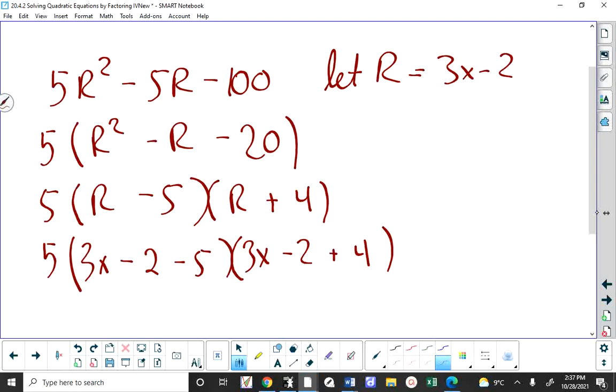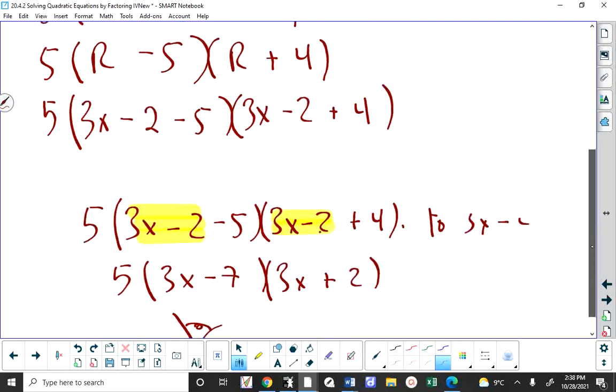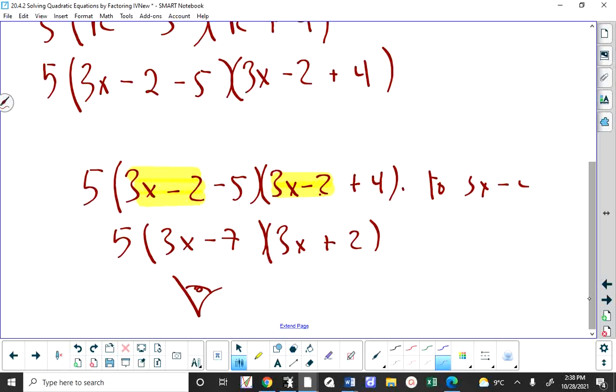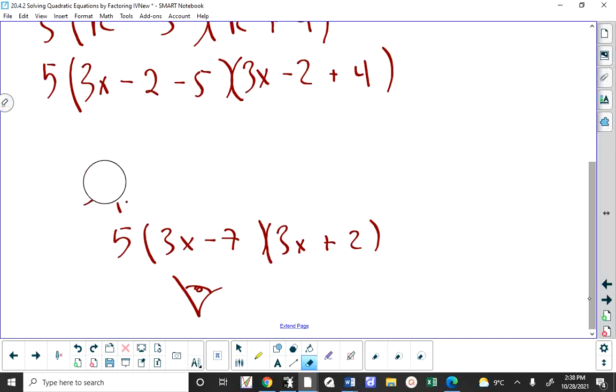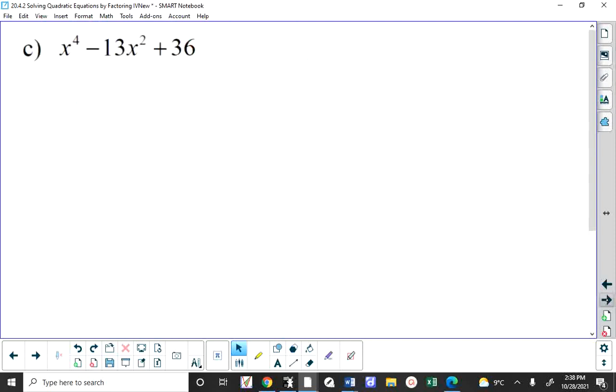And then you simplify what's inside of the sets of brackets. So I have, in the first set of brackets, 3x minus 2 and then minus 5. Negative 2 minus 5 is negative 7. In the second set of brackets, I have 3x minus 2 plus 4. Negative 2 plus 4 is 2. Now what you want to do is eyeball everything and see if you can factor something out. Can we factor something out of 3x minus 7? No. There's no common factor. And there's also no common factor here.